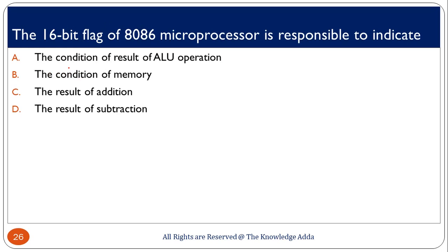The 16-bit flag register of the 8086 microprocessor is responsible for indicating the condition of the result of an ALU operation. Whatever operation is performed in the microprocessor, the condition of the result basically depends upon those operations.